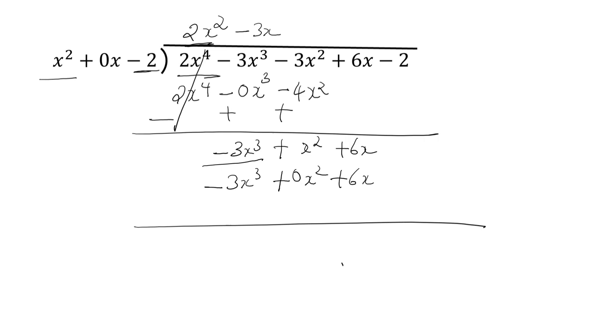Now if you observe, this and this get cancelled. This and this also get cancelled. You will have here x square plus 0x minus 2. x square divided by x square, what is it? 1. 1 into this thing, what will you have? x square plus 0x minus 2. So the remainder is 0.